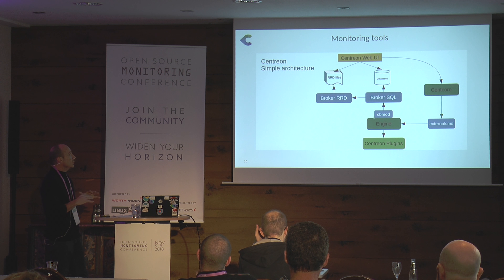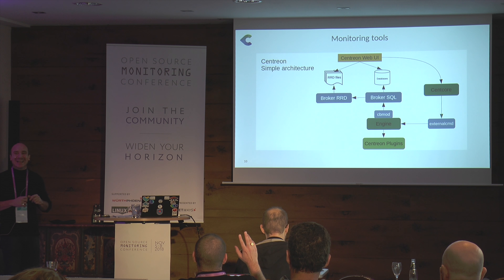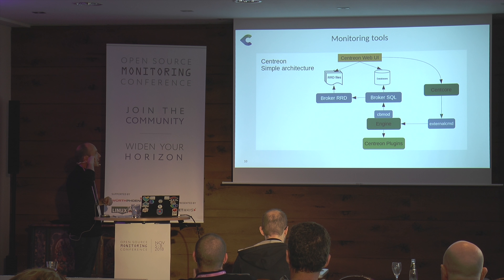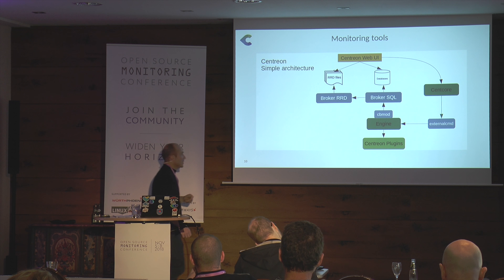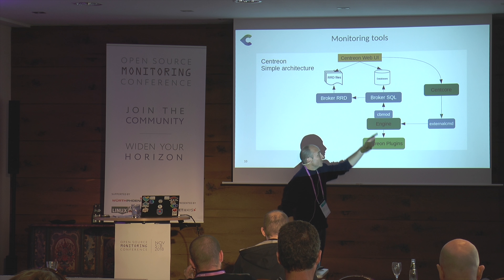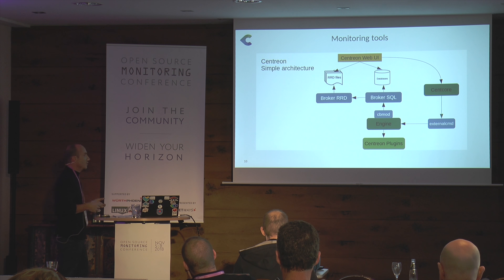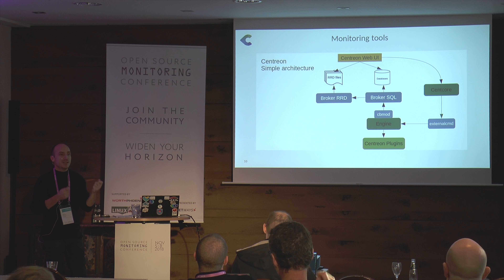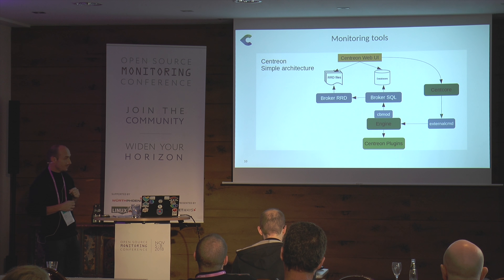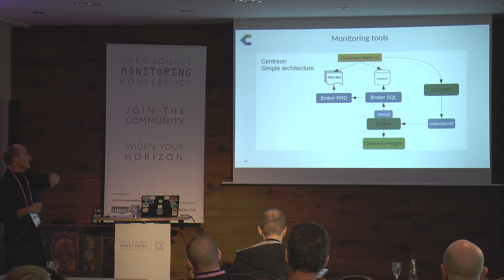I would like to present a little about Centreon. At the start, it was a fork of Nagios. The engine is a scheduler that executes checks, like we could do with Nagios. Data are collected by the engine, which sends those data to a broker. The broker is a multiplexer — it sends data to the database and can also send data to another broker or anything else.